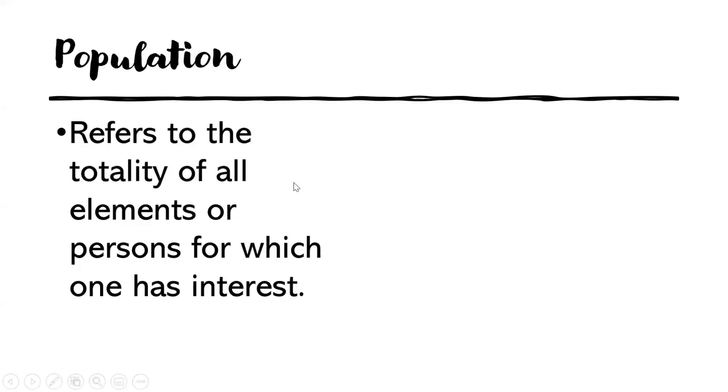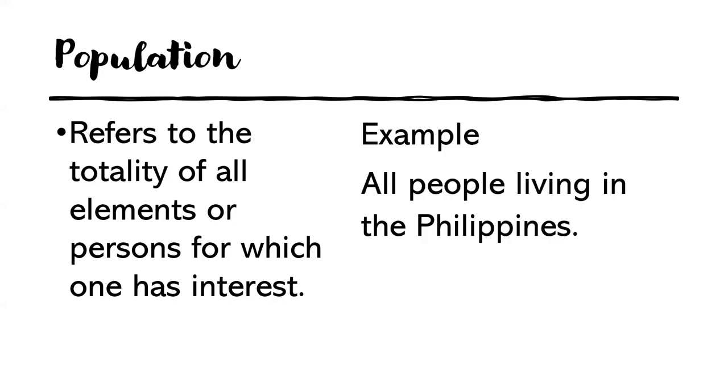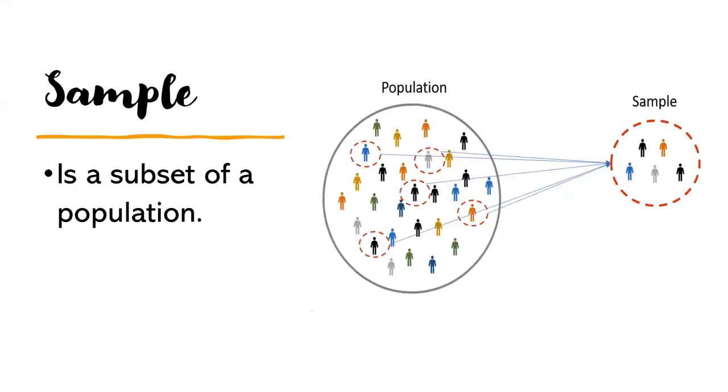Now, what is a population? Population refers to the totality of all elements or persons for which one has interest. All people living in the Philippines. So this could be an example of a population. Now, sample is a subset of a population. So this illustration shows a sample. So we get some from the population that is a sample.